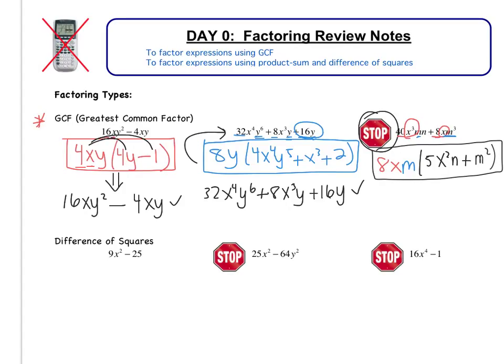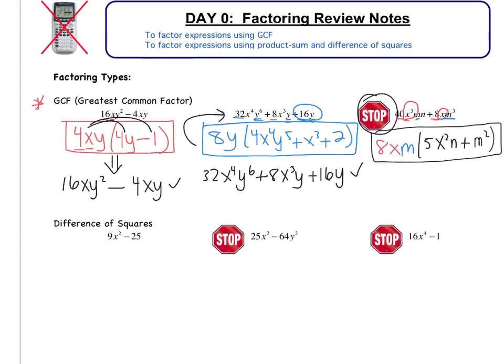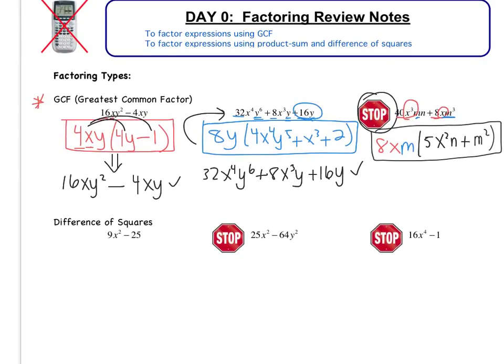That was the first factoring type. That was GCF, greatest common factor. You're always going to start with GCF. So anytime you have a factoring problem, you always want to look, are there any terms that I have in common or any factors I have in common in all the terms? If you factor out the GCF first, in every problem, it's going to make your life a lot easier. Beyond GCF, we have difference of squares. So that's the next factoring type that we're going to do.